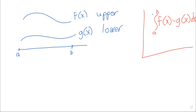Where this formula comes from is good review because it reminds us where integrals in general come from. Suppose we wanted to approximate this area. We've already approximated area under curves, and we got the integral from that. So it's not really surprising that the area between curves should also be an integral. We cut the axis up just like we did when looking at area under curves, and in each little interval we select a point — we call that x_i star.